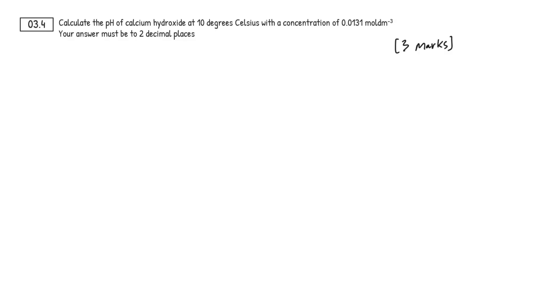All right. Question 3.4. Getting a bit more interesting here. We're doing some calculations. So, calculate the pH of calcium hydroxide at 10 degrees Celsius with a concentration of 0.0131 moles per decimetre cubed. Your answer must be to 2 decimal places. Again, pH always has to be to 2 DPs. So, you may look at this question and think, wow, this is so easy. All we have to do is use our KW expression, rearrange it to find H plus, plug that into your log expression. Happy days, right? Three easy marks.